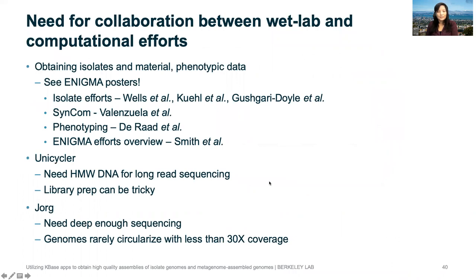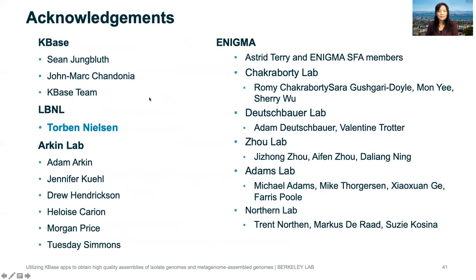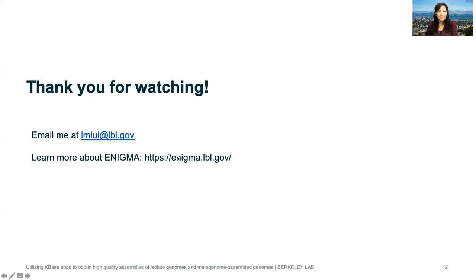To wrap up: obtaining high quality genomes and linking genotype to phenotype requires good collaboration between wet lab and computational efforts. You need isolates — and for diverse isolates you have to try many different things — plus phenotype data. The sequencing input matters: you want high molecular weight DNA for long reads and deep enough sequencing for both the Unicycler and Yorg input data. I'd like to thank everyone at KBase, especially Torben Nielsen who collaborated on all the projects, the ARCAN Lab, and all my Enigma collaborators. Thank you for watching, and I'm happy to answer questions.